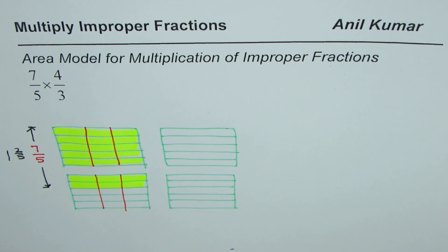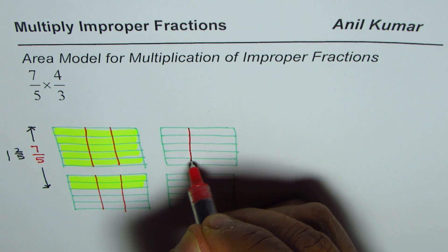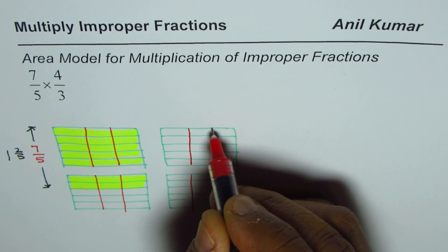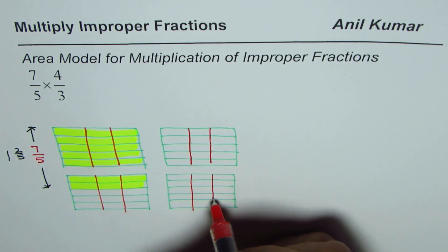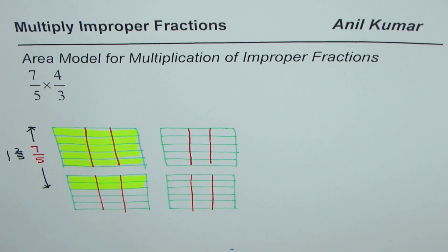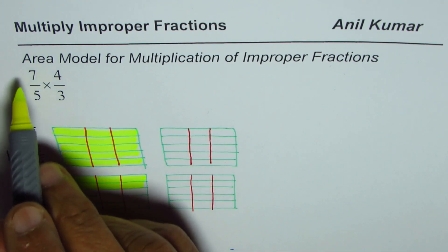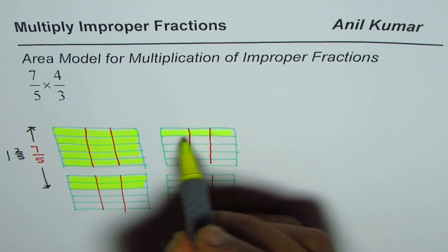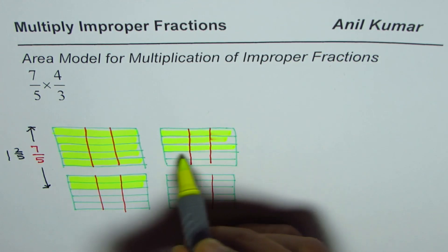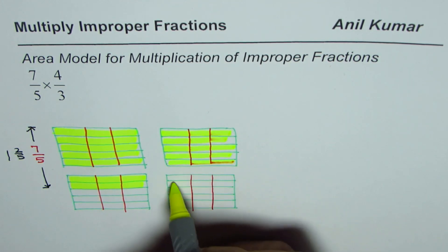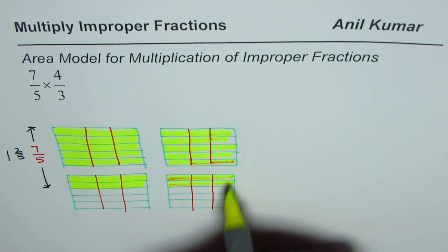And also divide them into 3 equal parts. Now since I have made a copy of this, I need to shade this yellow portion also. So that is 7 over 5 of this also. So that is how it is. So 1 whole and 2 out of these.